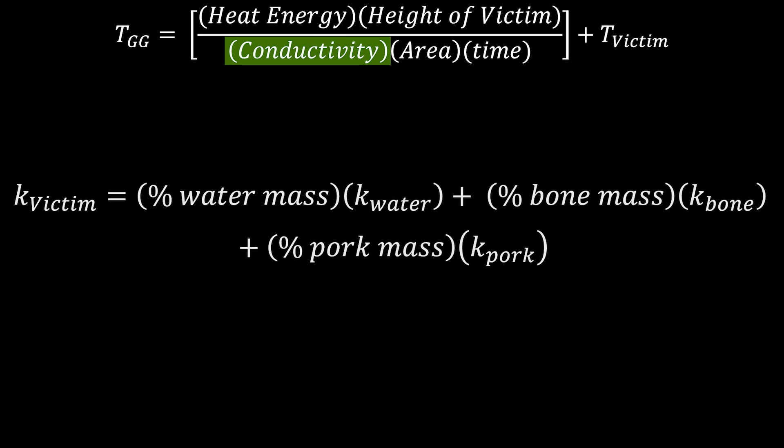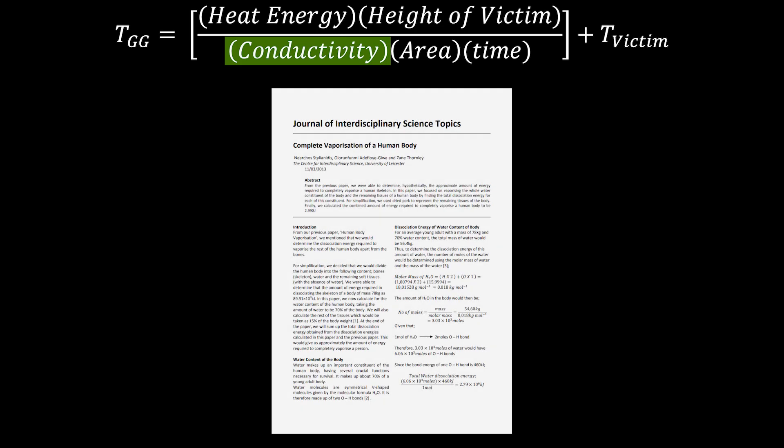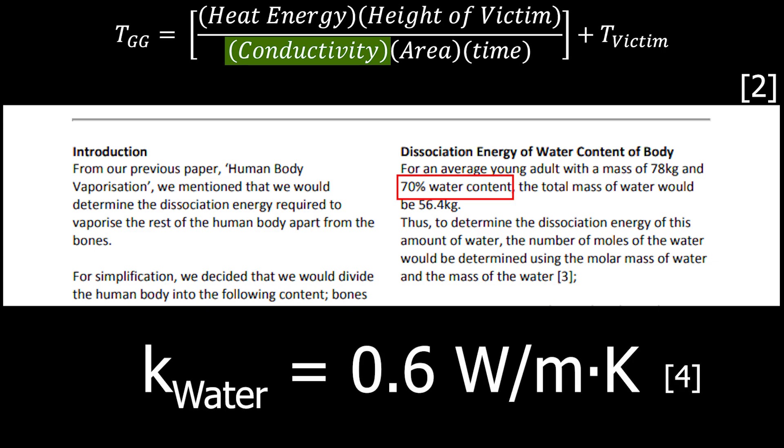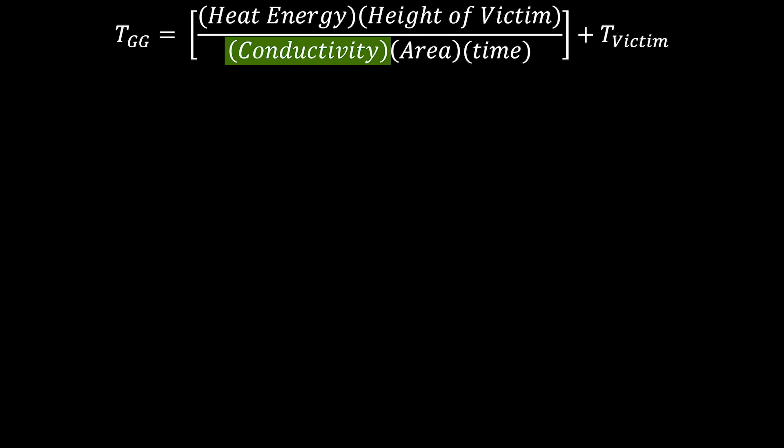As you may have heard, humans are about 70% water, and the conductivity of water is about 0.6 watts per meter Kelvin. But what about the rest?